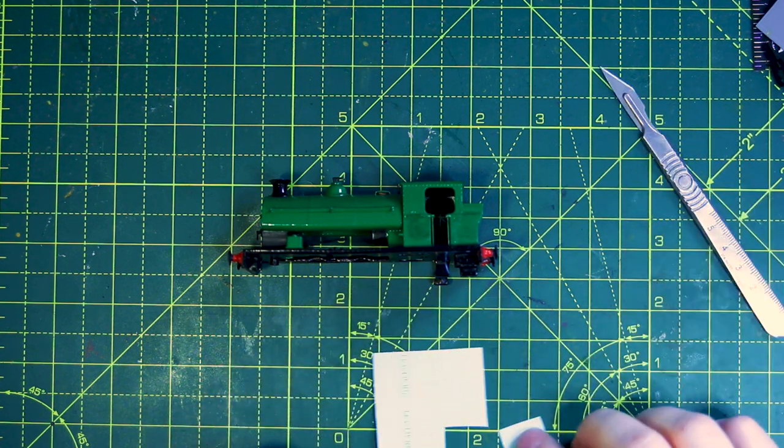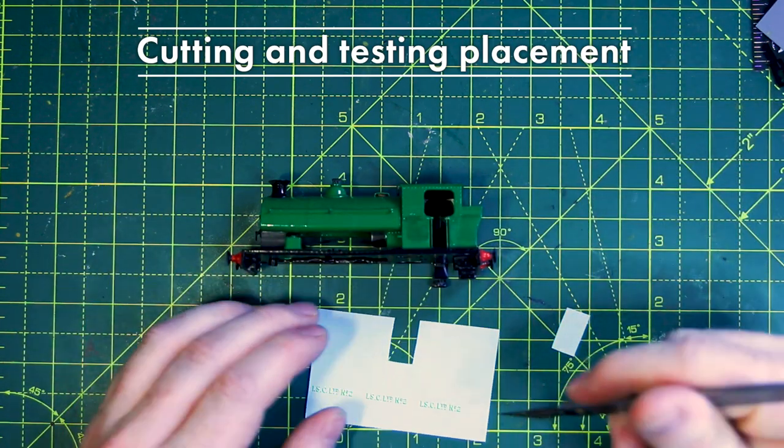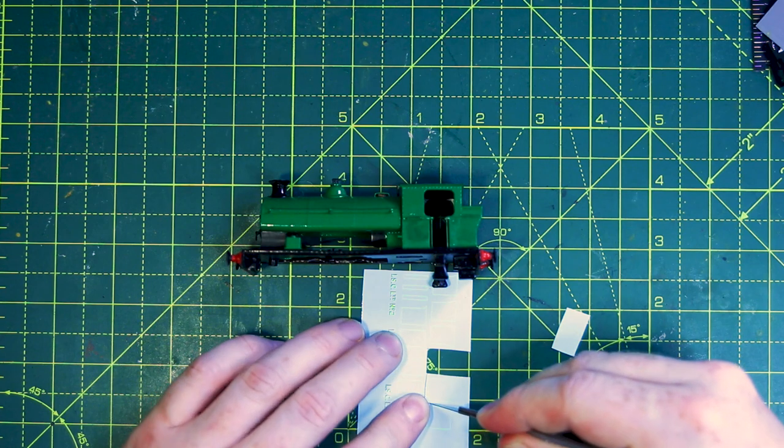First up I'm tackling the cab, cutting around the various sections and offering them up to check where they go. Alas the transfer paper doesn't show up terribly well on camera, but you'll see how it looks shortly.